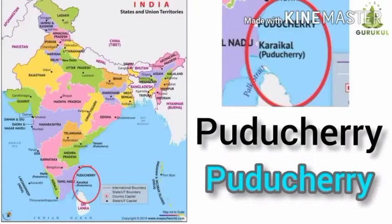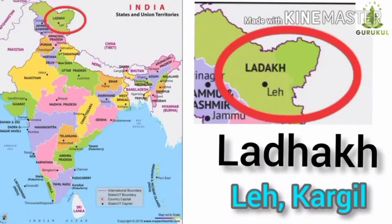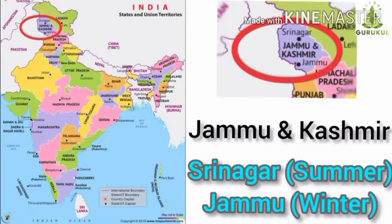Sixth, Puducherry or Pondicherry — and the capital is Puducherry itself. Seventh, Ladakh — capital is Leh-Kargil. And the eighth union territory, Jammu and Kashmir — capital is Srinagar in summer and Jammu in winter.